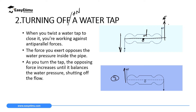To turn the tap off, you reverse the direction — one side moves up and the other moves down. When turning it off, you exert a force that opposes the water pressure inside. This force increases until it balances the water pressure, and the tap shuts — the water stops flowing. When turning it on, one force goes down and the other goes up; the water pressure from inside is then high enough to open the valve and water flows out.